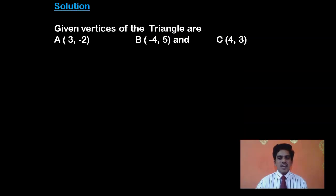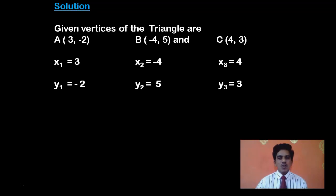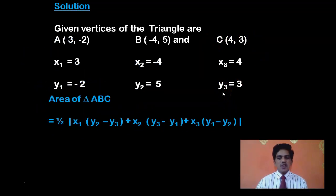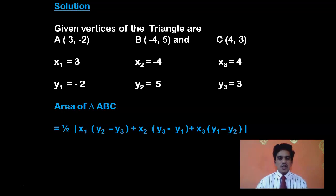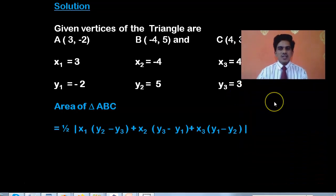First, list the coordinates. Write the three x-coordinates and then the three y-coordinates: x1, x2, x3 and y1, y2, y3. Here x1, y1 is the first vertex A; x2, y2 is the second vertex B; and x3, y3 is the third vertex C. Now write down the formula: this is 1/2 modulus of x1(y2 - y3) + x2(y3 - y1) + x3(y1 - y2). This is a very important formula. Now comes the important point — substitution of the values of the vertices in place of x1, y1, x2, y2 and x3, y3.